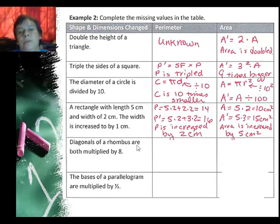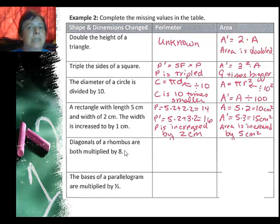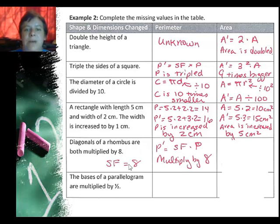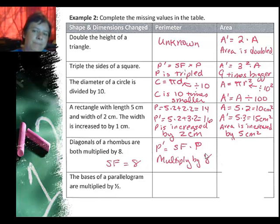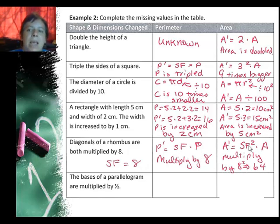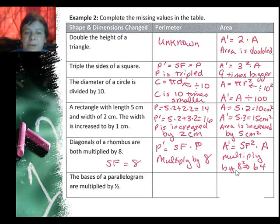The diagonals of a rhombus are both multiplied by eight. Since I'm going in both dimensions, this is like using a scale factor of eight. So the new perimeter equals the scale factor times the old perimeter — it's multiplied by eight. The area uses scale factor squared: 8² = 64, so the area will be sixty-four times bigger.